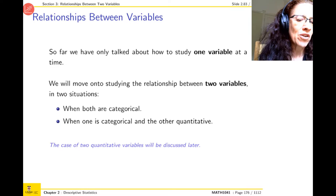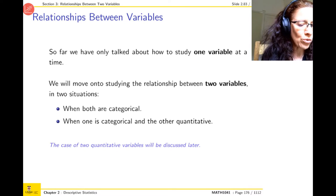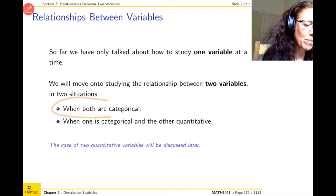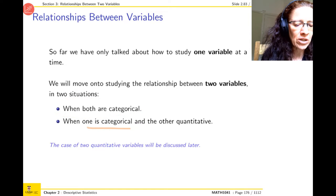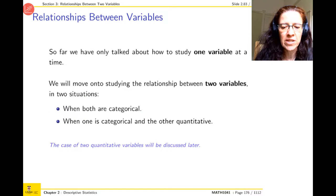So this is just a summary of what we do. We've done it for one, now let's do it for two. One of them is categorical, so both could be categorical or one categorical and one quantitative.